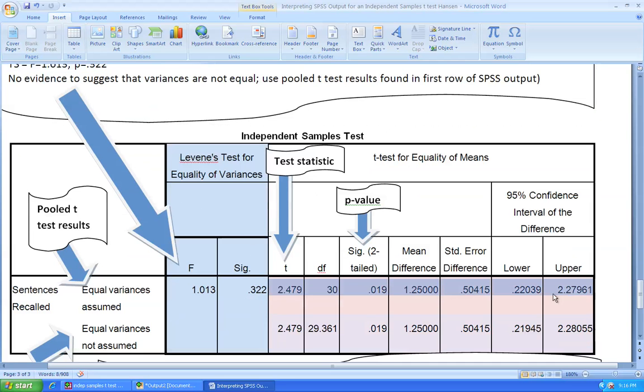As we look at the pooled t-test output, we see that we are given the test statistic t of 2.479, the degrees of freedom which are 30, and then the p-value of the test which is 0.019. We're also provided with the mean difference and the standard error of the difference, as well as a 95% confidence interval on the difference.